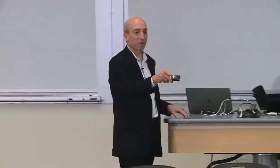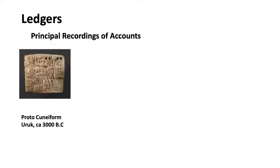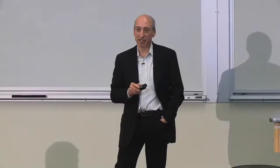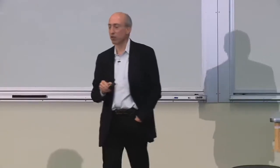Ledgers. What is a ledger? It's a way to record economic transactions — principal recordings of accounts. 5,000 years ago this was already happening. Here is the personal ledger of George Washington, our first president — he was 15 years old when he kept this ledger, and apparently kept ledgers until his death 52 years later. Ledgers can just record the transactions of the day.